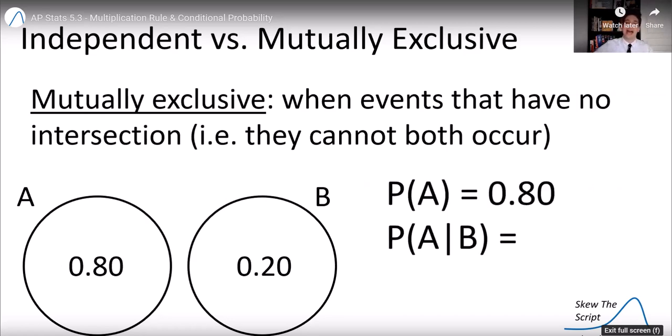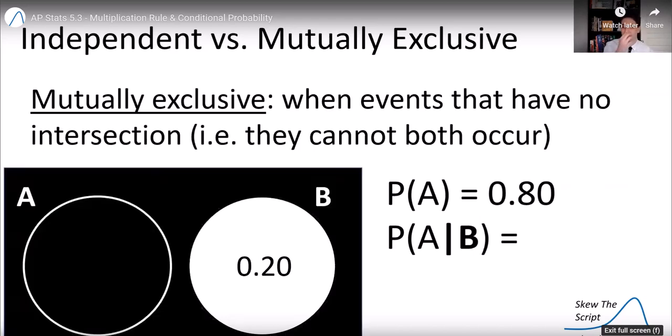So the probability of A happening is 0.8. The probability of A happening given that B has already happened. Well, let's look at that. So we're given that B has happened, so we're ignoring everything except for B. And now there's no probability of A left. It's zero because, remember, these are mutually exclusive. They cannot both occur. So if you know that B has occurred, A is definitely not going to occur.